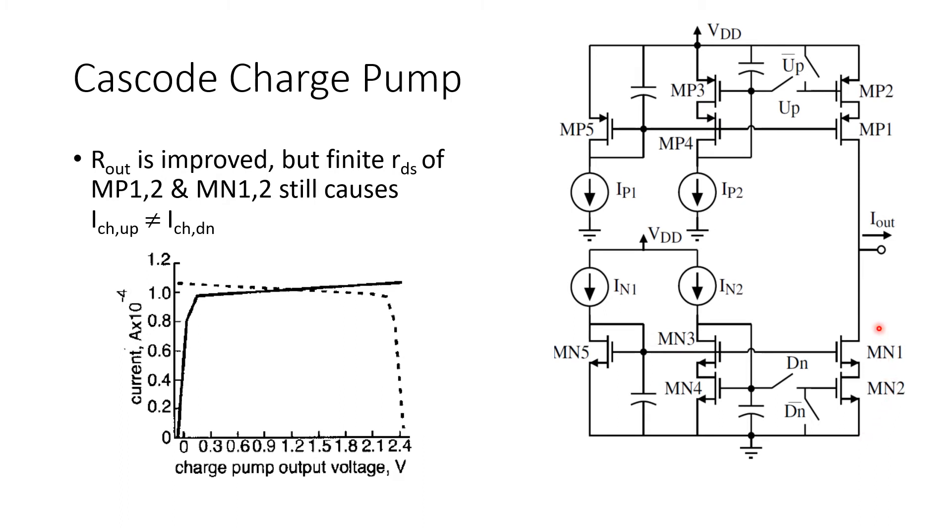So we've got a higher output resistance. But still, there will be a finite Rout for this charge pump circuit. And there will be some mismatch between the pull-up and pull-down currents that depends on the output voltage.